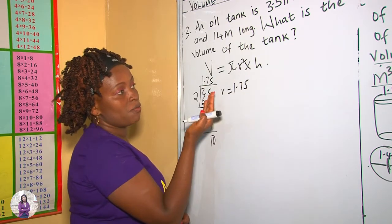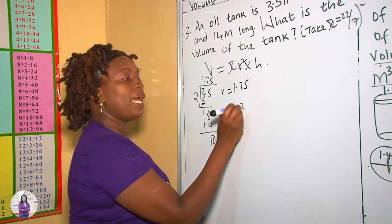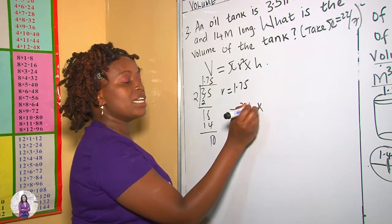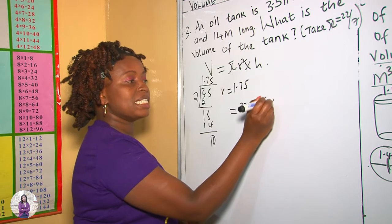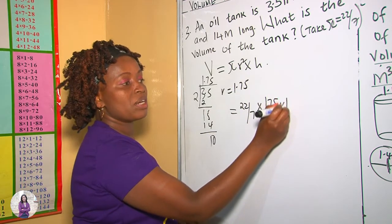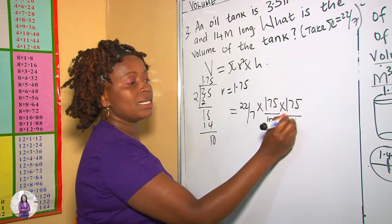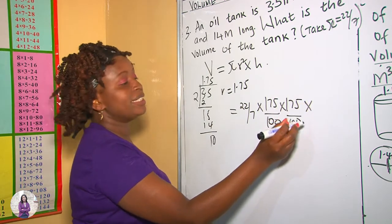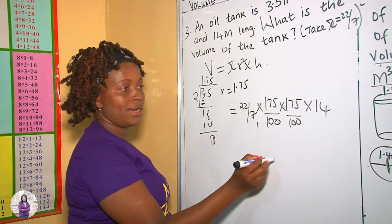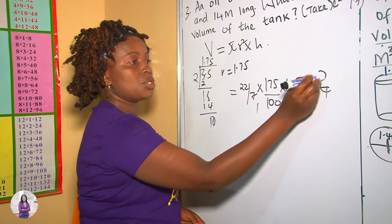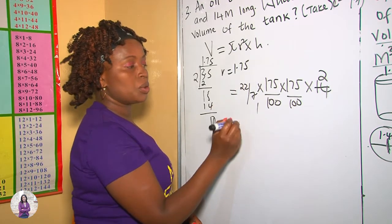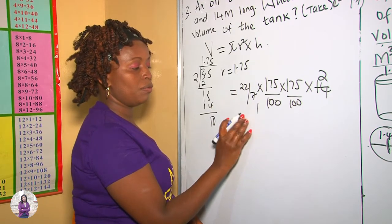Now let's get the volume. Our pi is 22 over 7, multiplied by the radius, which is 1.75, written as the fraction 175 over 100, times 175 over 100, times our height, which is 14. Cross-multiplying: 7 into 175 gives 25; 7 into 14 gives 2. We then compute 2 multiplied by 22, which is 44. Now let's multiply 175 by 175, which gives 30,625.